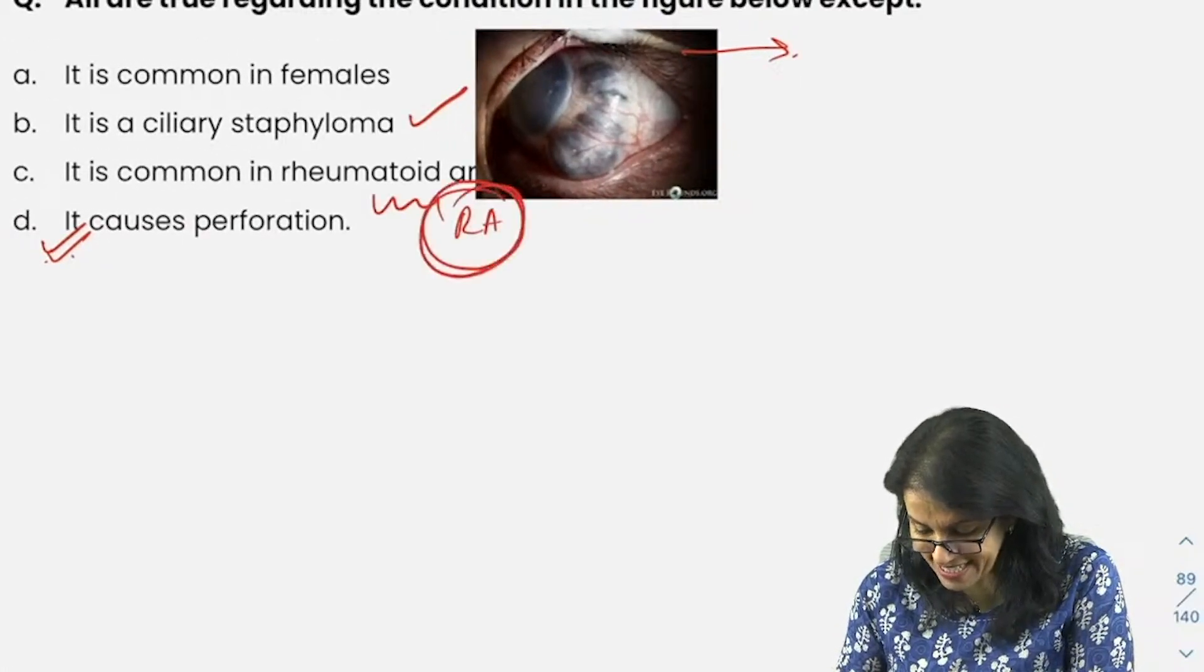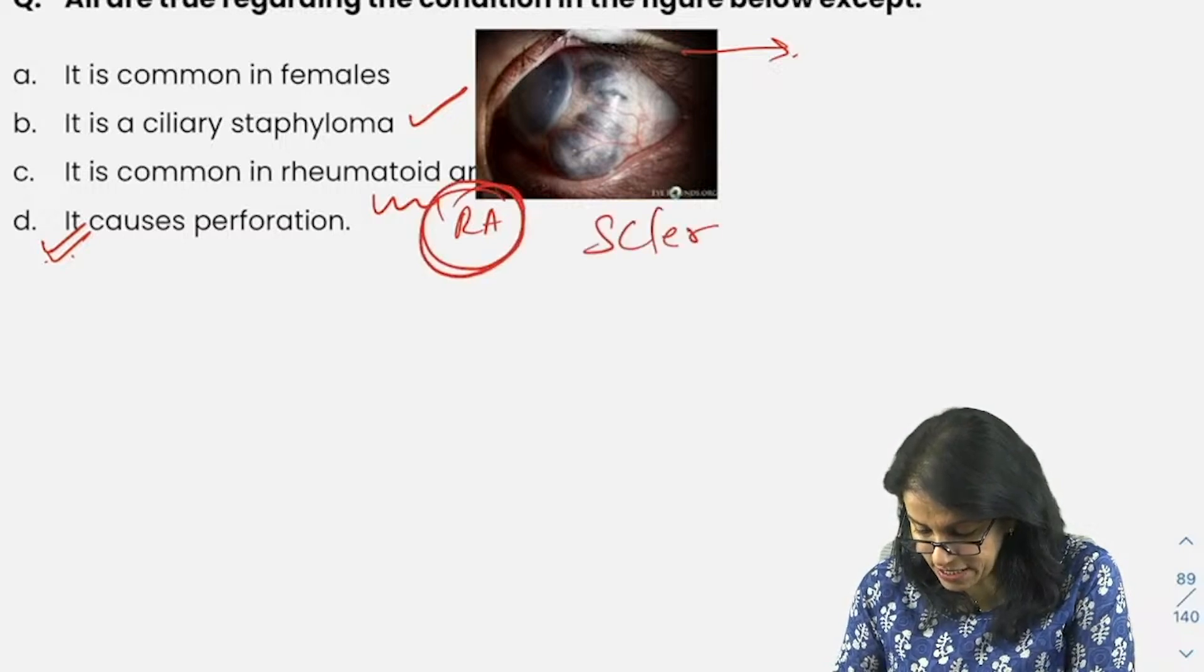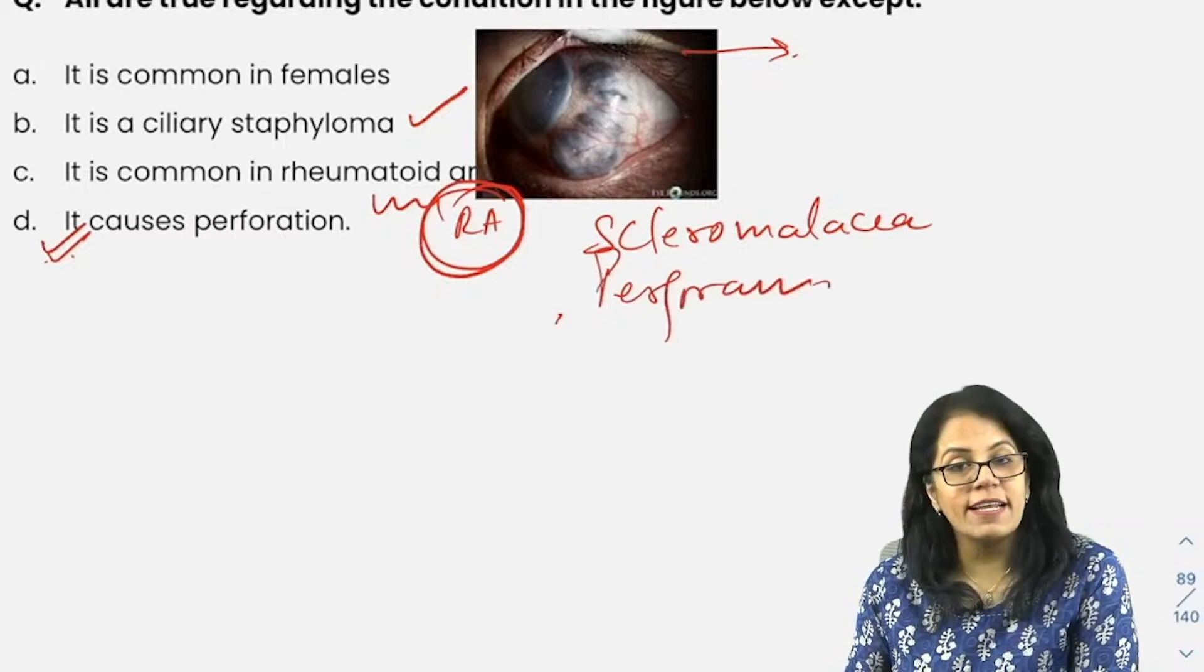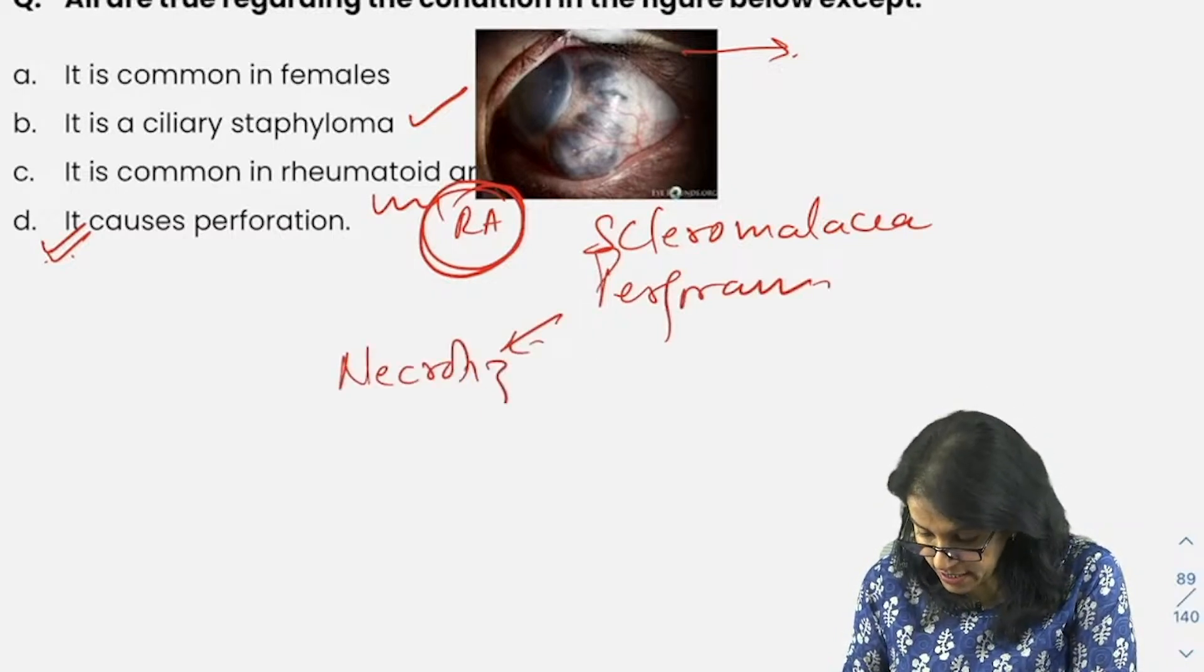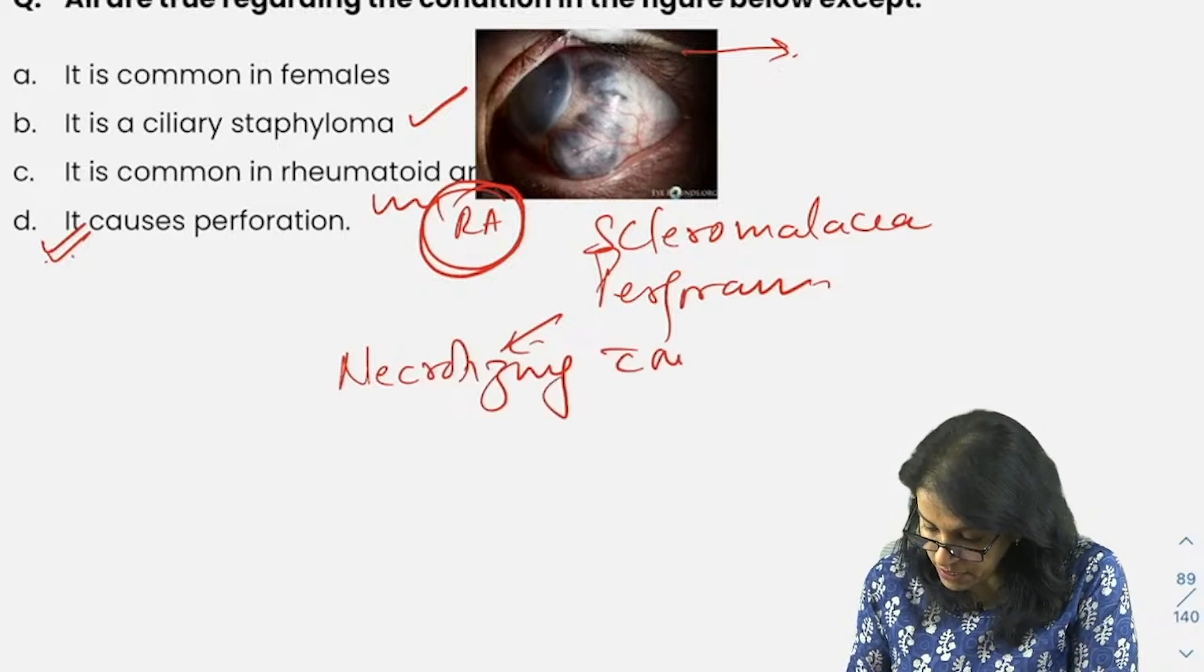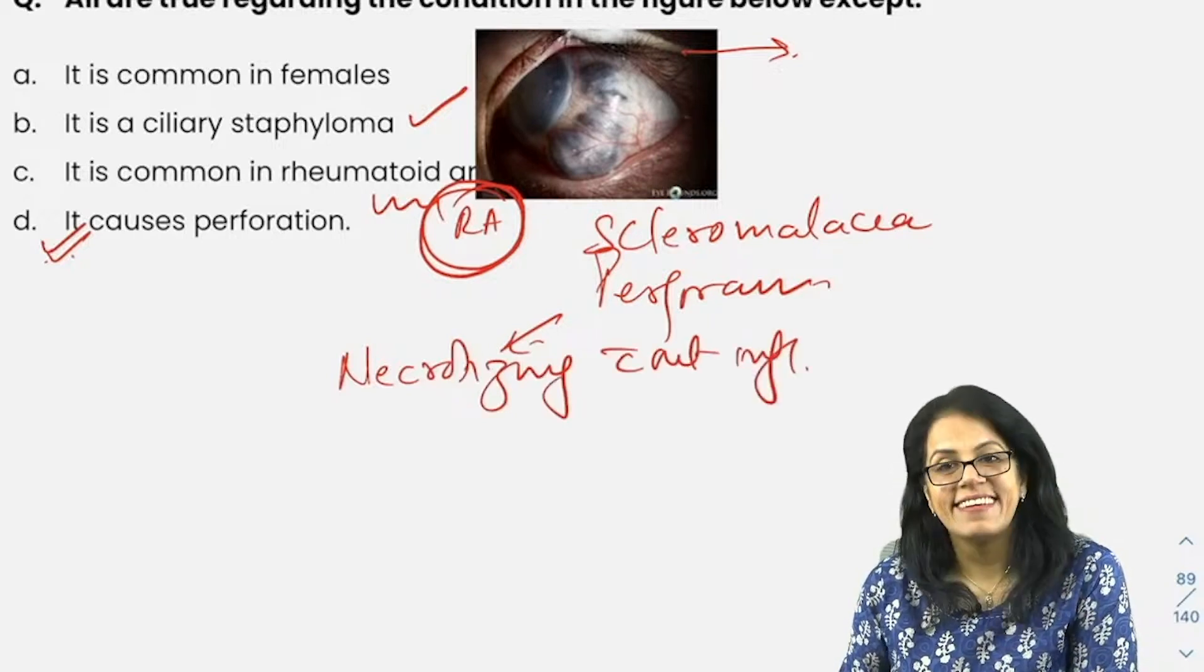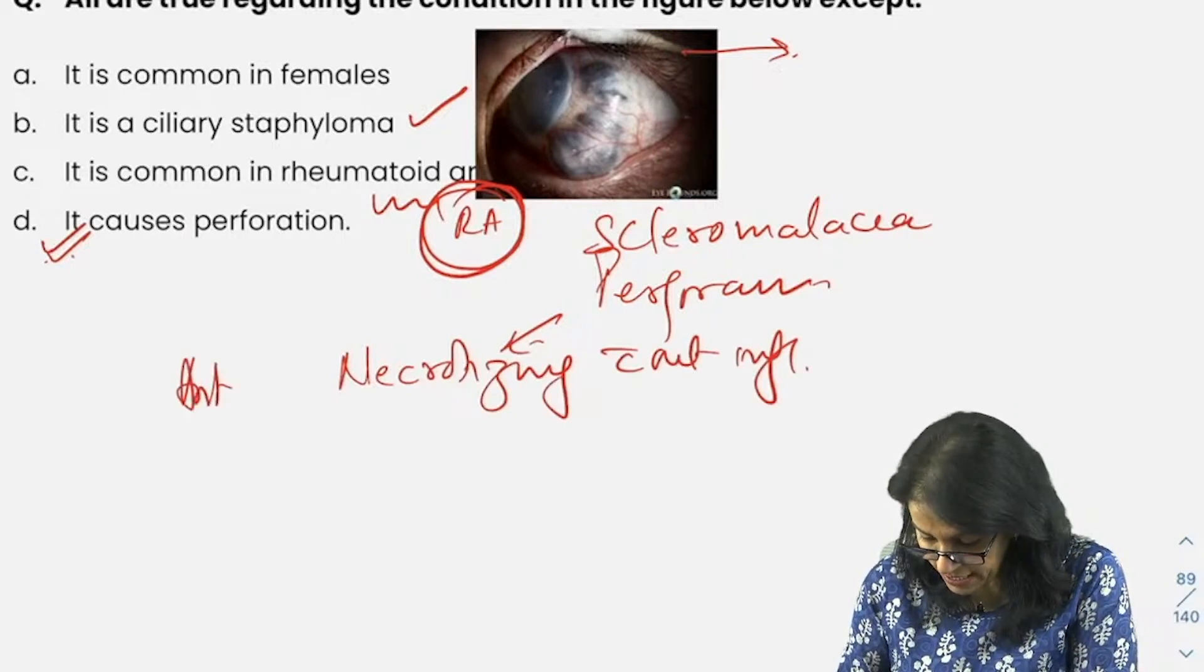What is this? This is your scleromalacia. Exam question: what type of scleritis is it? It is necrotizing scleritis without inflammation, anti-scleritis.